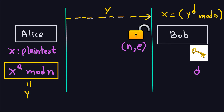Hello and welcome again. In the previous video we started talking about RSA and how we can communicate using a public key, which is a pair of numbers N and E, and a private key which is another number D. We're assuming that Alice wants to send a message to Bob, so Bob will have a public key which anyone can grab, and a private key that only he can use.